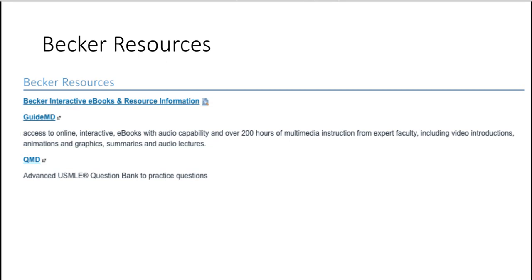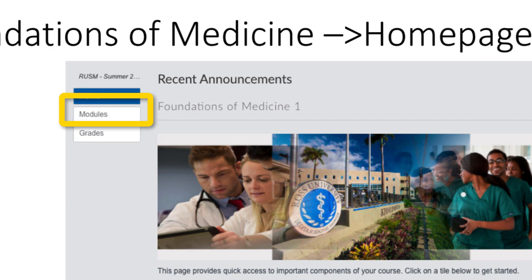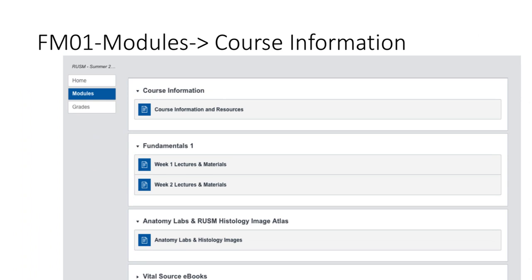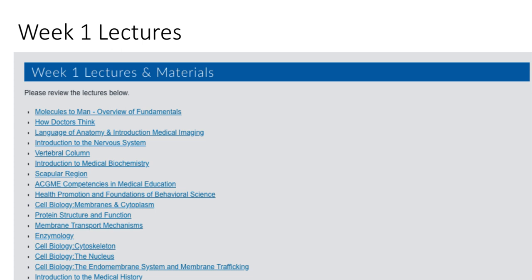If you go back to the home page and click on Modules, this is your course content for semester one. This is where you will find lots of course information, so make sure you click through the top section. If you want to know what lectures you're having for week one and week two, we only show you two weeks at a time — we don't want to overload you with information. If you click on Week One lectures, you will find all the topics and lectures saved there for you to start previewing.